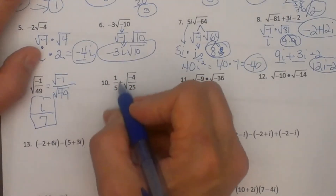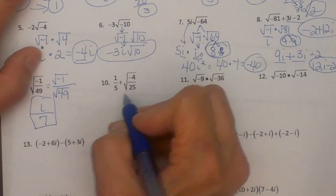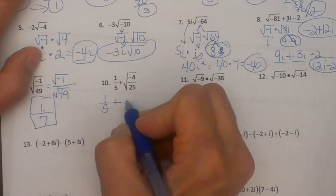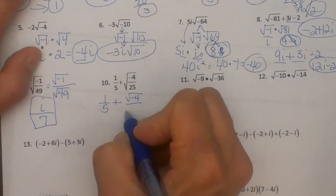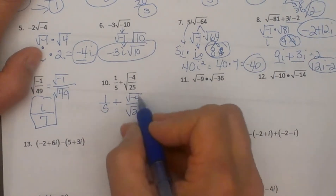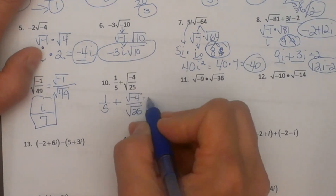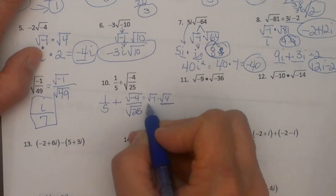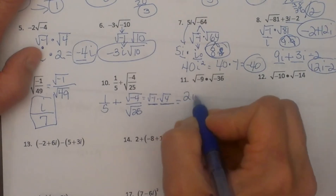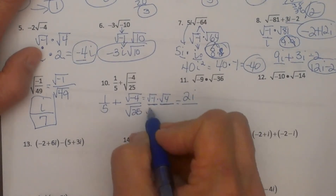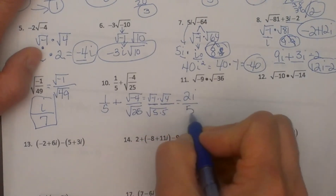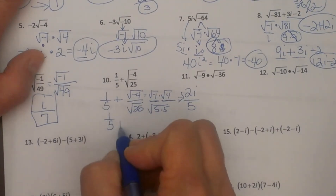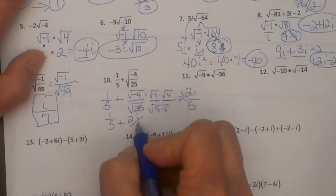Here is one with another fraction. We have one fifth plus a square root. I am just going to bring the one fifth down and let it hang out while I simplify this square root. I am going to split it into the square root of negative 4 over the square root of 25. The square root of negative 4 is the square root of negative 1 times the square root of 4, which becomes 2i. So my numerator is 2i and my denominator — the square root of 25 — is 5. So my final answer is one fifth plus 2i over 5.